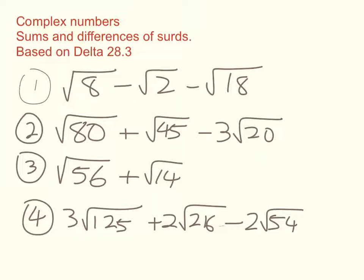I'm going to go quite slowly through these four examples. So pause the video and have a go, and then I'll start with number one. Here's the first example. At the moment, it's written as three separate square roots, and we want to see if we can simplify that and have it written with fewer terms.